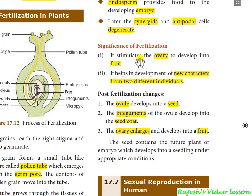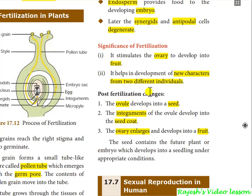Significance of fertilization: it stimulates the ovary to develop into a fruit. When fertilization takes place, it produces hormones that give stimulus to the ovary, and the ovary becomes a fruit. Post-fertilization changes: the ovule develops into a seed, and the two integuments are converted into the seed coat. The ovary enlarges into a fruit.